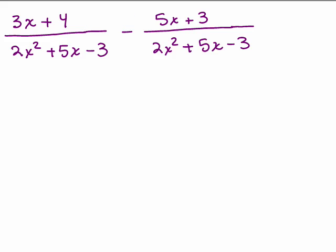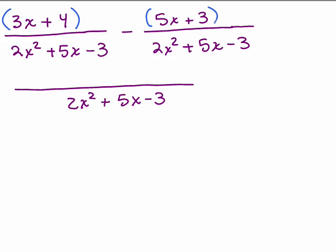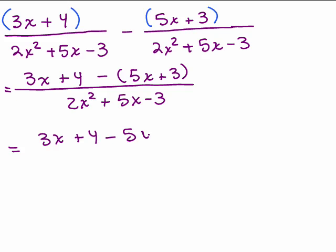Here's another example. Try putting it on pause and seeing if you could do it, see if you could do it all by yourself. So let's see. We have a common denominator. So we have just the 2x squared plus 5x minus 3. But in the numerators, remember you're going to have to subtract that quantity minus this other quantity. So I've got 3x plus 4 minus the whole numerator 5x plus 3, which will give you 3x plus 4 minus 5x minus 3. Be careful here.